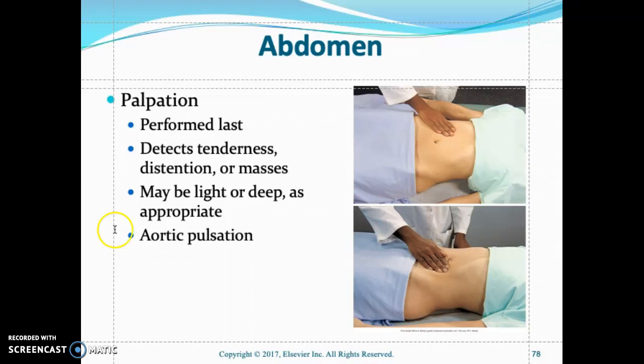For deep palpation, which is about four to five centimeters, look for aortic pulsation — you should not see any aortic pulsation on the abdomen. Ask the patient about their bowel patterns: do they have regular bowel patterns? Do they have difficulty urinating? Are they constipated? Inquire about their last menstrual period or last Pap smear.